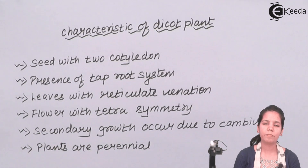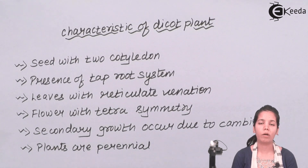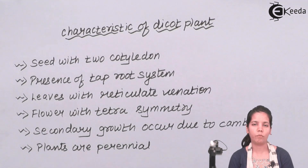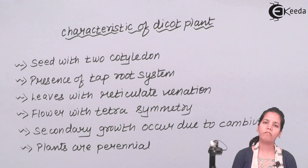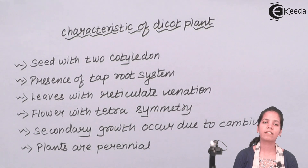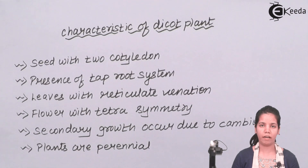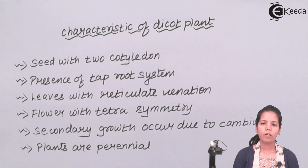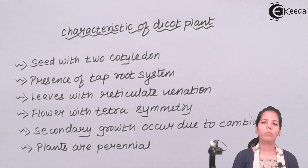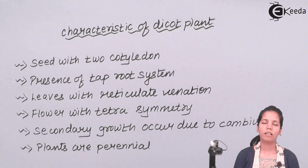In this part of the chapter, what we studied were the characteristics of dicot plants and how dicot plants behave in different atmospheres and why they require nitrogen. I hope you are all clear with this concept of dicot plants. Thank you.